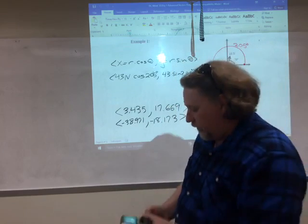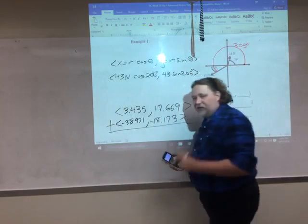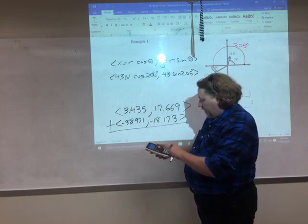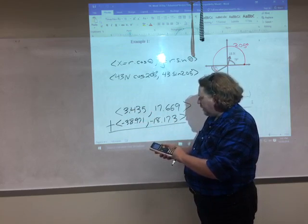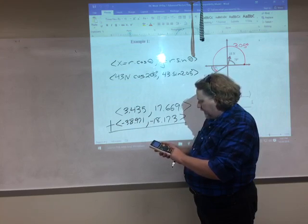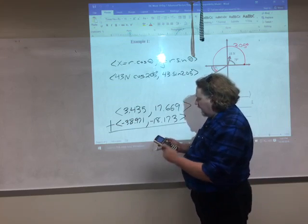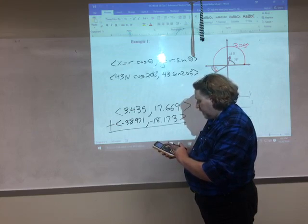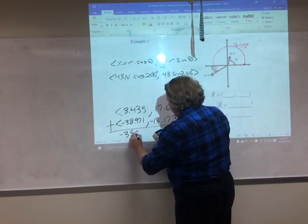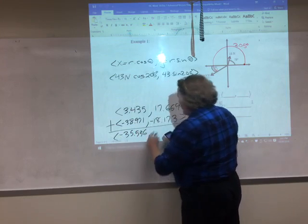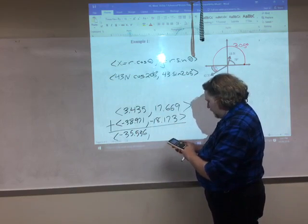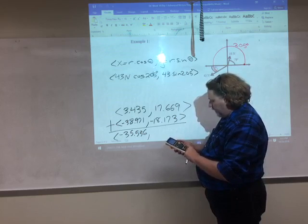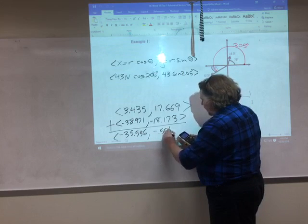So I want to find my overall result. All I've got to do now is add these two guys together. And of course, I'm not going to do that by hand. That's what calculators are for. So adding up the X's, I have 3.435 plus negative 38.971 gives me, oops, hit the wrong button there, gives me negative 35.536.